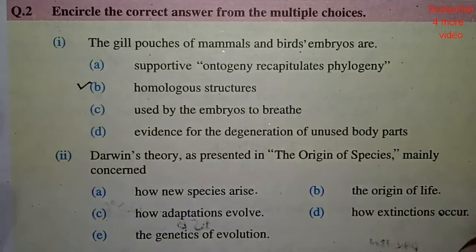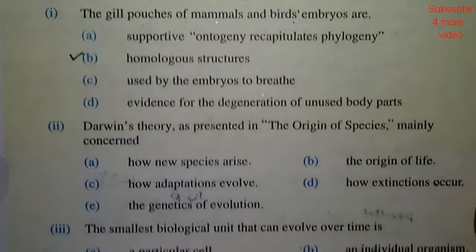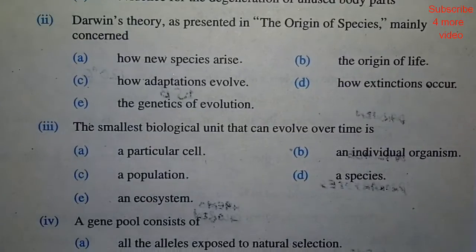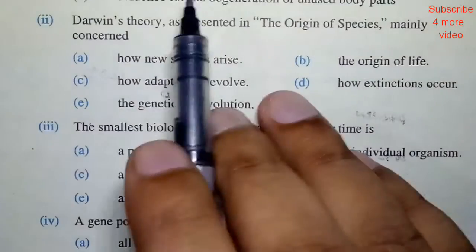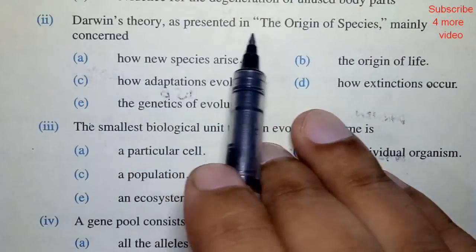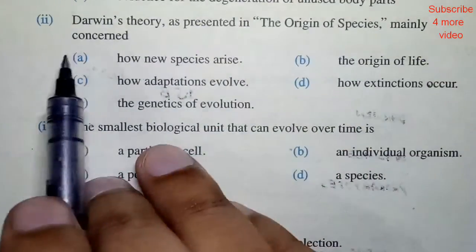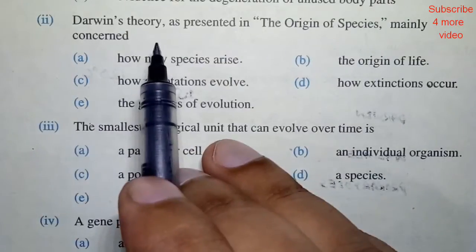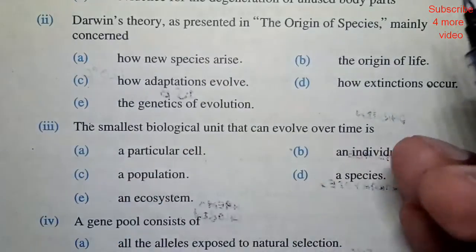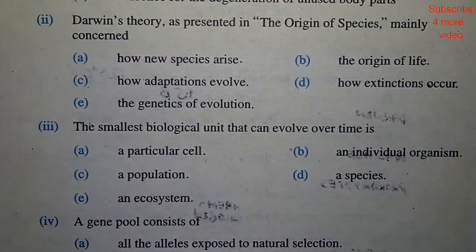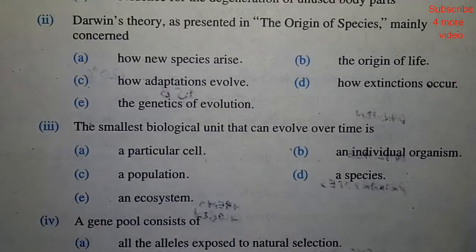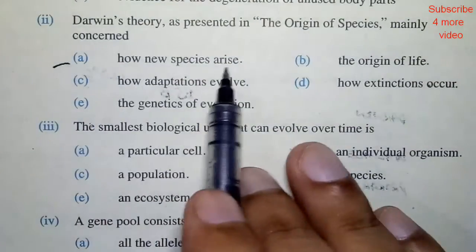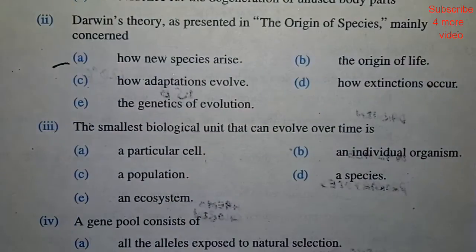Next MCQ: Darwin's theory as presented in the original species was mainly concerned with — you can take the answer as: how new species arise.